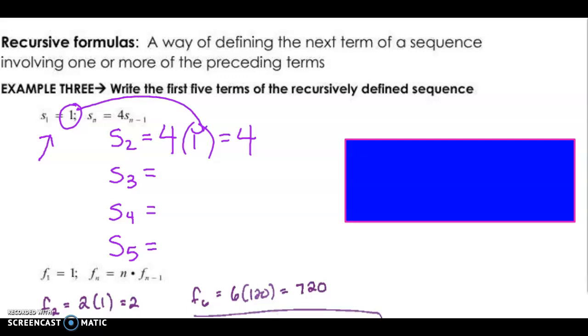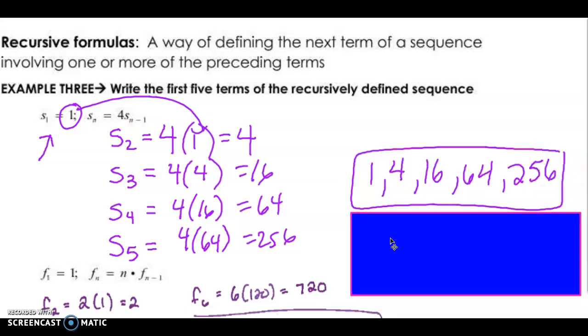Then for s sub 3, it's 4 times the previous one, s sub 2, which we know, we just learned, is 4. So that's going to be 16. And so s sub 4 is 4 times 16, and that's 64. And then s sub 5 is 4 times 64. I'm just following the formula, and that's 256. And then it does ask to write the first five terms. Yeah, there we go. So that's how they want them written.